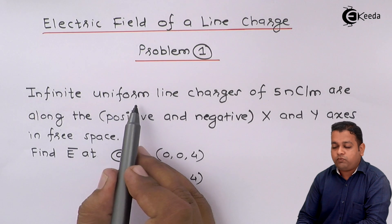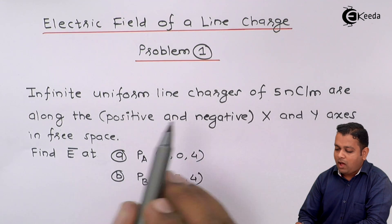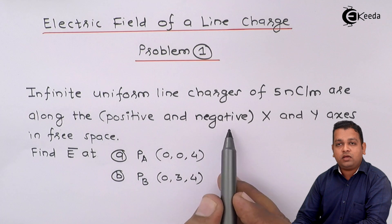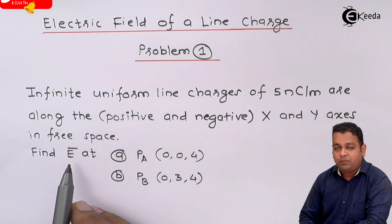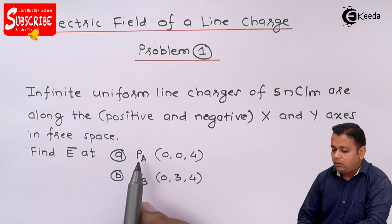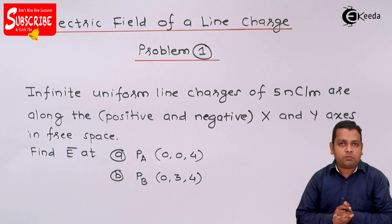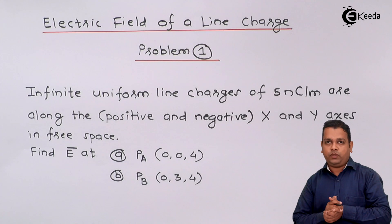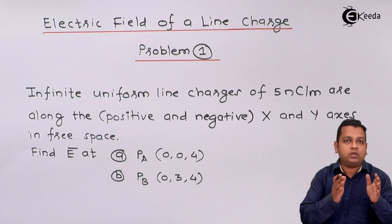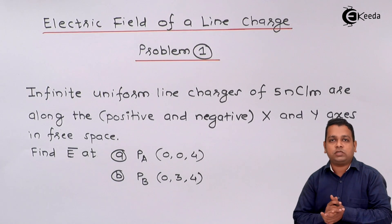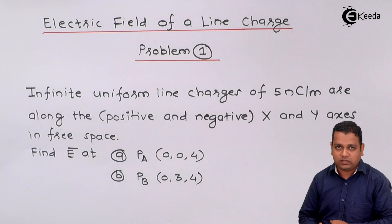The problem statement: Infinite uniform line charges of 5 nanocoulomb per meter are along the positive and negative x and y-axis in free space. Find E bar at point PA and point PB. From the problem, infinite uniform line charges are present, for which we have just derived the formula to find electric field intensity.